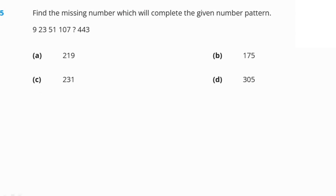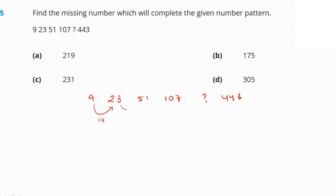Find the missing number to complete the given number pattern. The digits are 9, 23, 51, 107, ?, 443. The differences are: 23−9=14, 51−23=28, 107−51=56. The pattern is that each difference doubles: 14×2=28, 28×2=56, 56×2=112.